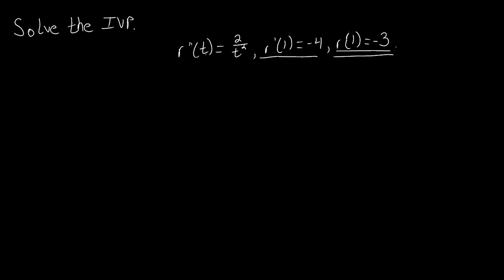So we have the first derivative — we were given the second derivative — and we have initial conditions for the first derivative and for the function r of t. Instead of thinking about this as a separable differential equation, we're going to imagine that if we have r double prime of t, we know that the derivative of r prime of t is r double prime of t. So we can think that r prime of t is an anti-derivative of r double prime of t.